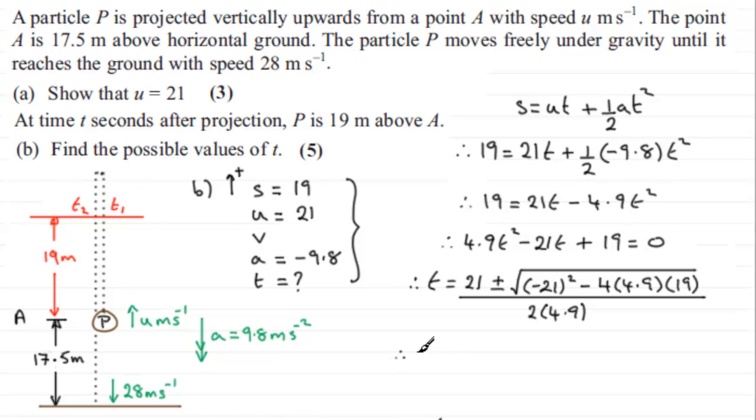So you can see that therefore T1, if you work it out, turns out to be 1.2977 and so on. And for the second value of T,